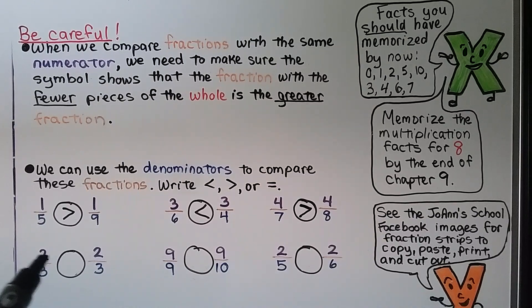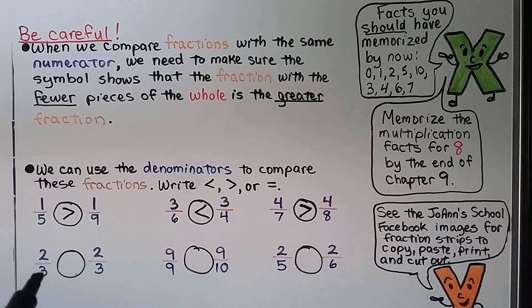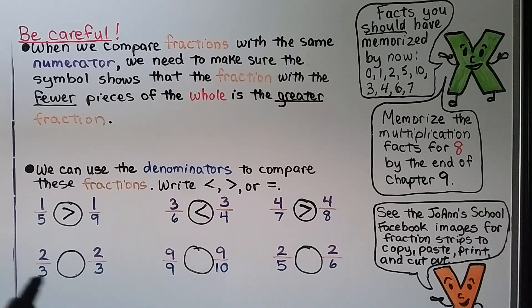For this one, they both have a two for a numerator, and they both have a three for a denominator. They are the same, so we use an equal sign: two-thirds is equal to two-thirds.